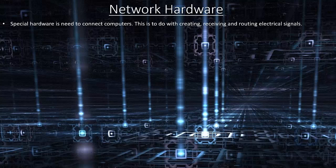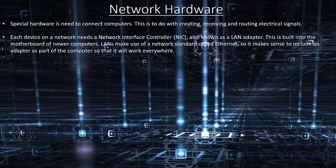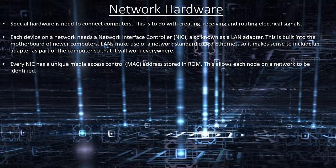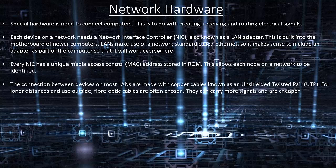Network hardware. Special hardware is needed to connect computers, to do with creating, receiving and routing electrical signals. Each device on a network needs a network interface controller, also known as a LAN adapter, which is built into the motherboard of newer computers. LANs make use of the Ethernet standard. Every NIC has a unique media access control, MAC, address stored in ROM, which allows each node on a network to be identified. Connections between devices on most LANs are made with copper cables — unshielded twisted pair. For longer distances and outside use, fibre optic cables are often chosen, as they can carry more signals.